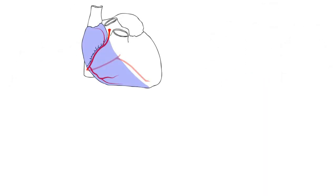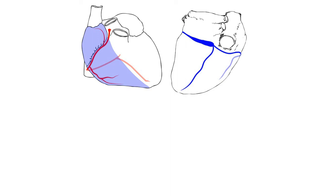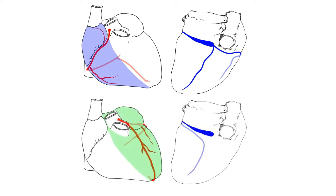Let's summarize the coronary circulation. Oxygenated blood goes through the right coronary artery, supplies the right side of the heart, and is then drained into the small and middle cardiac veins, which drain into the coronary sinus, which ultimately drains into the right atrium. The left side of the heart is supplied by the left coronary artery, which drains into the great cardiac vein, which drains into the coronary sinus and finally empties into the right atrium. That was the total coronary circulation in a nutshell.